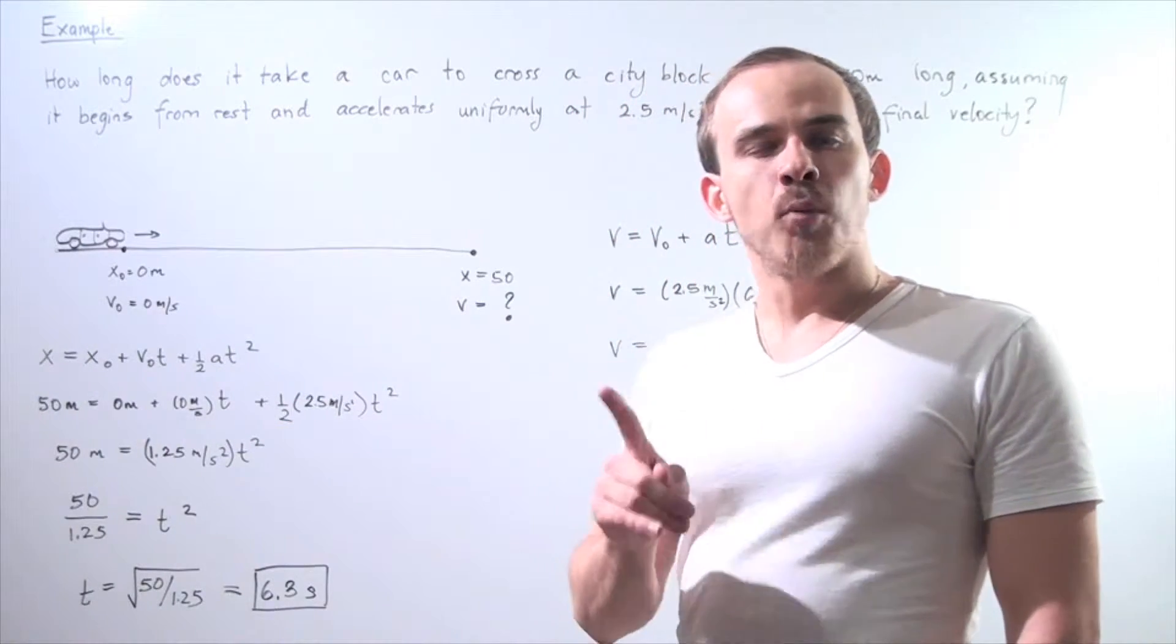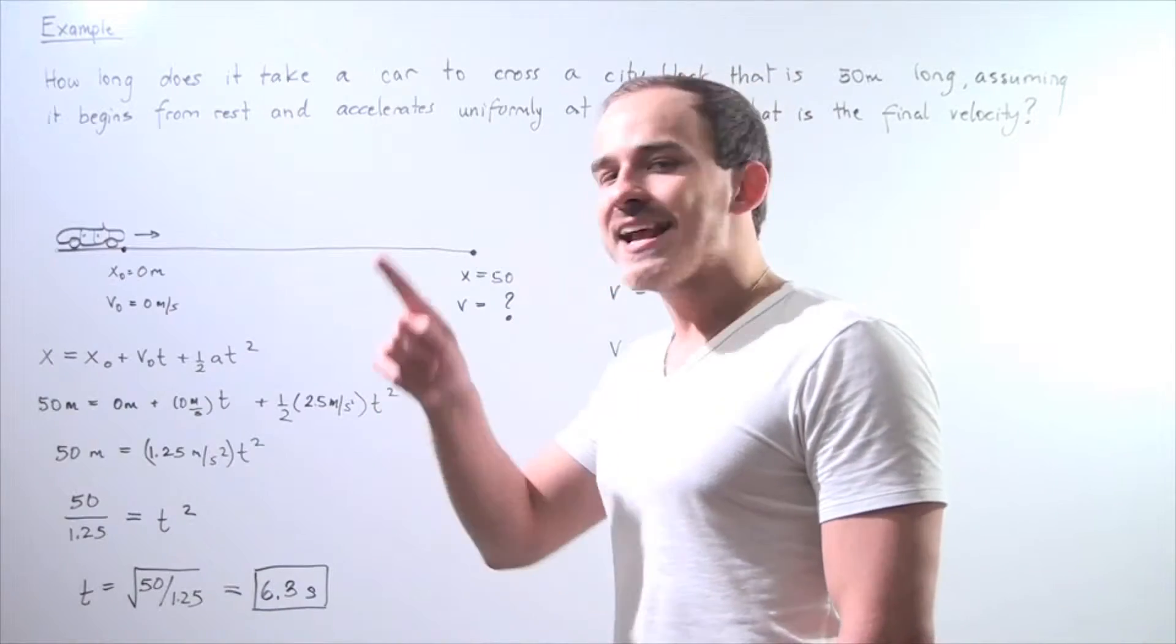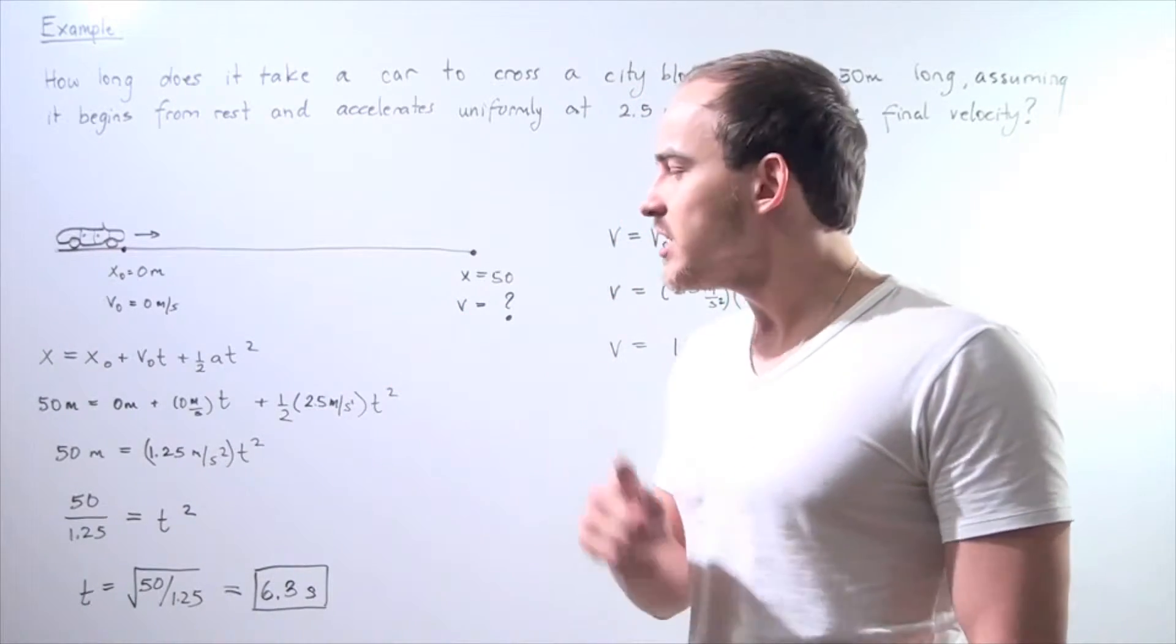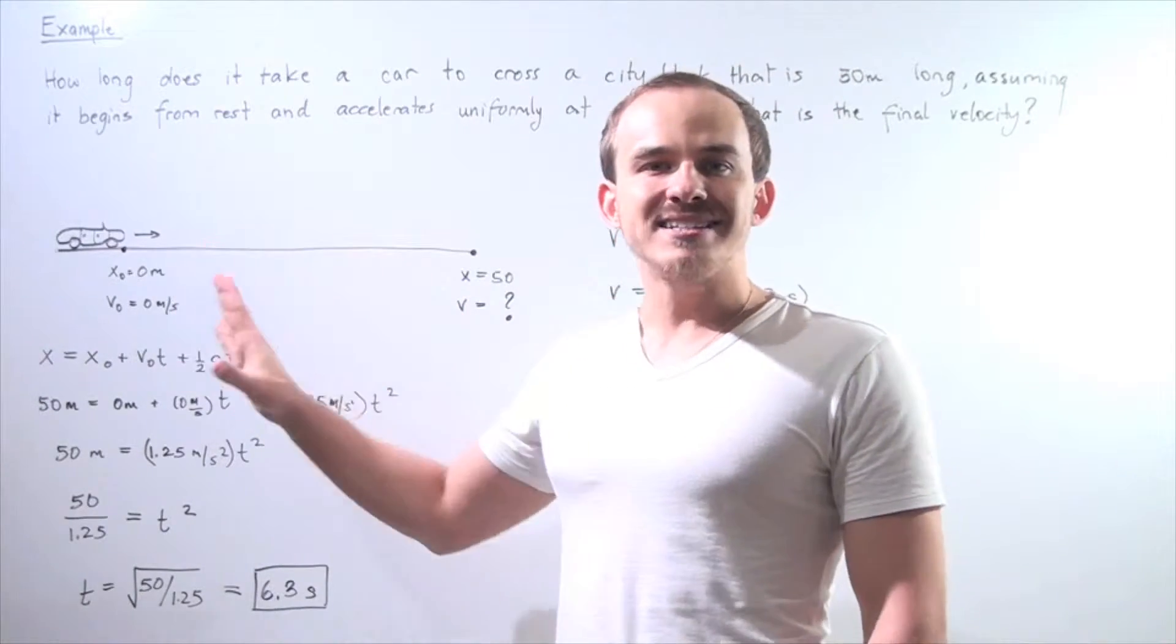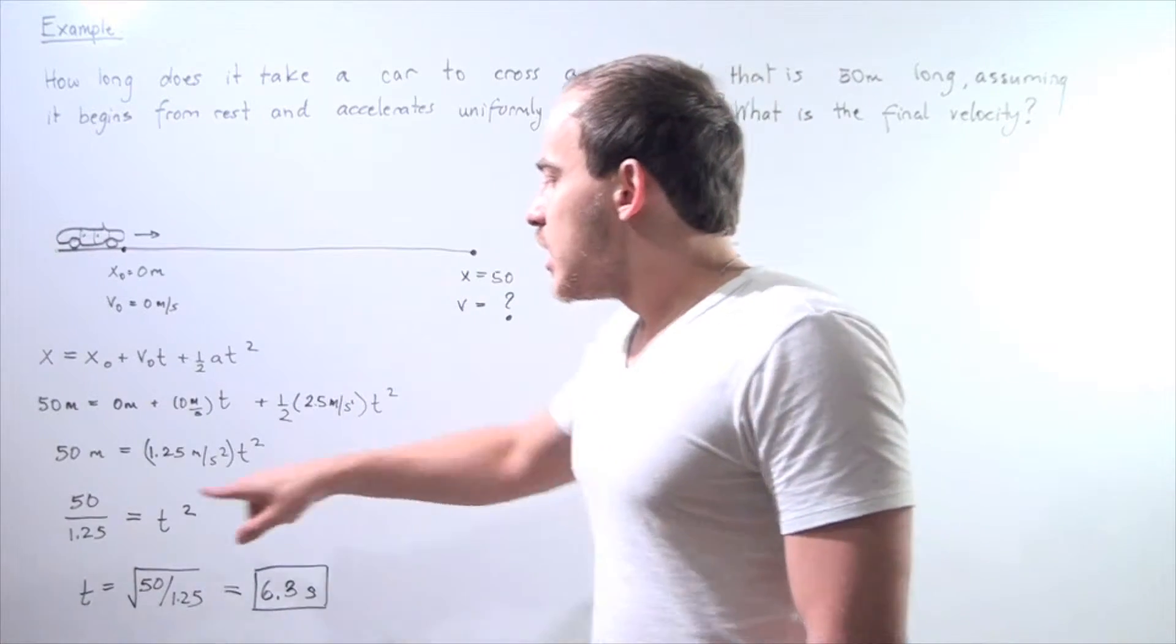Let's divide both sides by 1.25 and then take the radical of both sides because we want to get t by itself on one side.